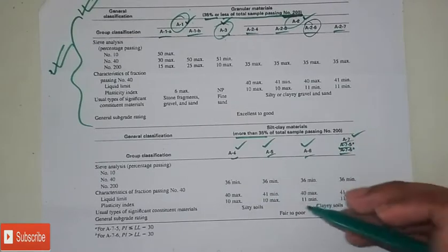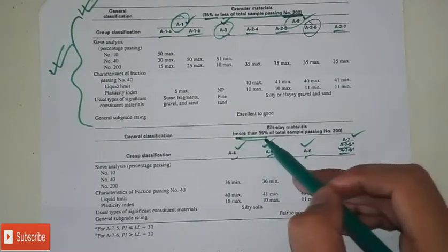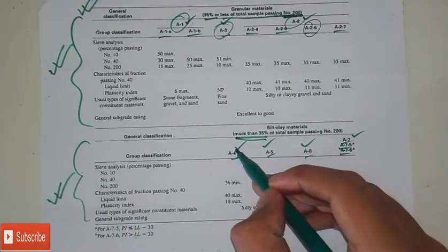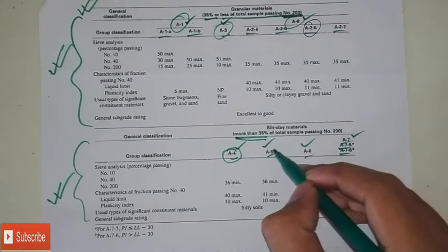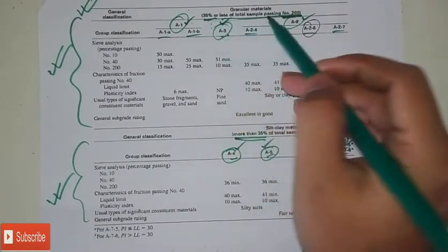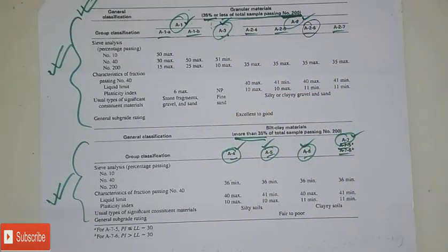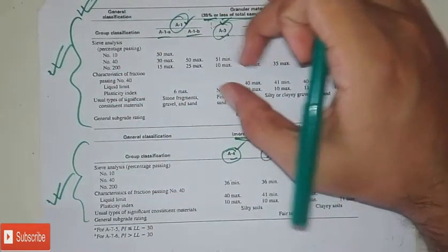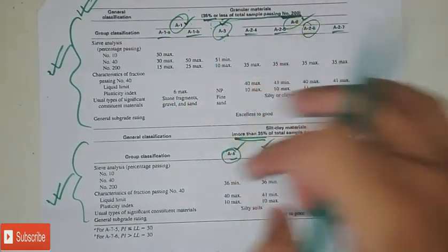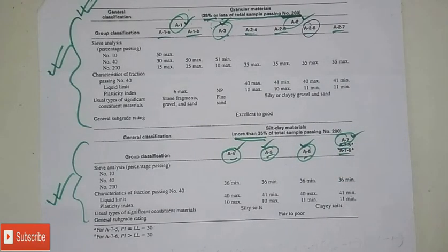Soil is classified as a table in the class. We have to find the name of the soil in the main group — A5, A6, or A7. We have to find the main criteria in this area. The criteria help determine whether the soil falls into A3, A2, A4, A5, A6, or A7.